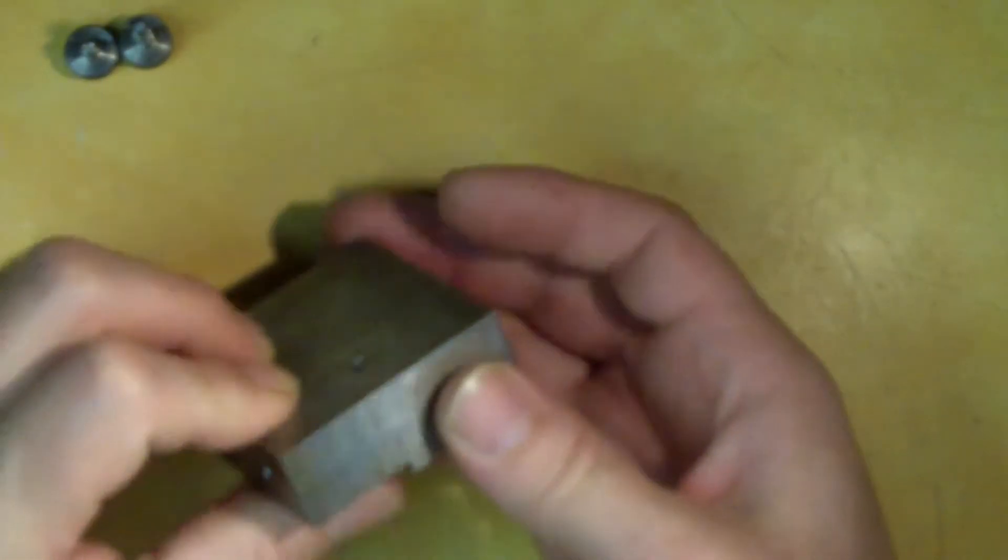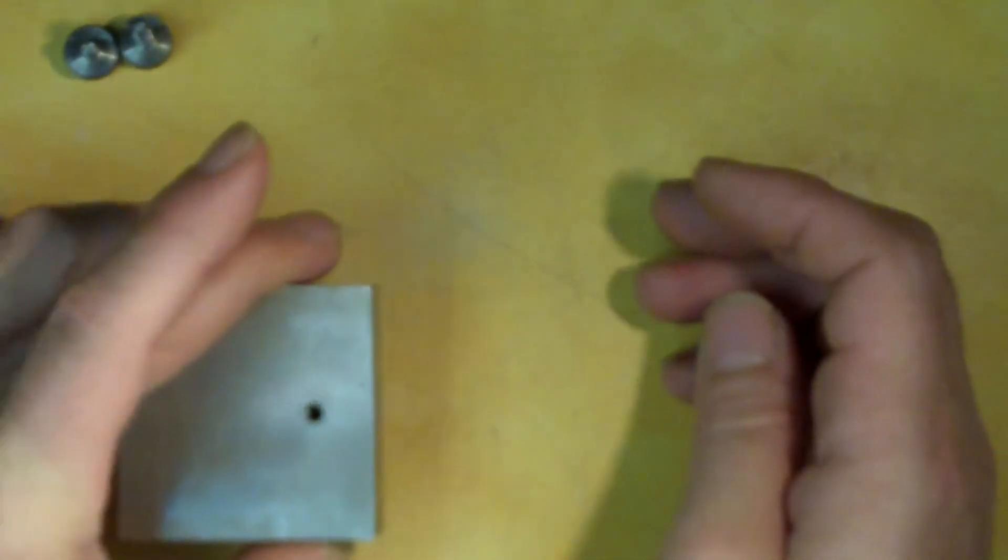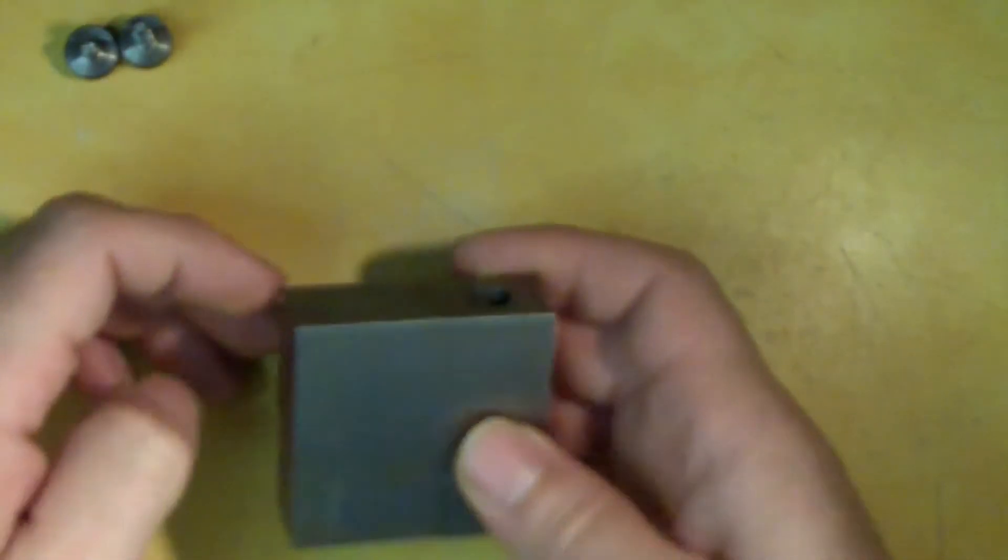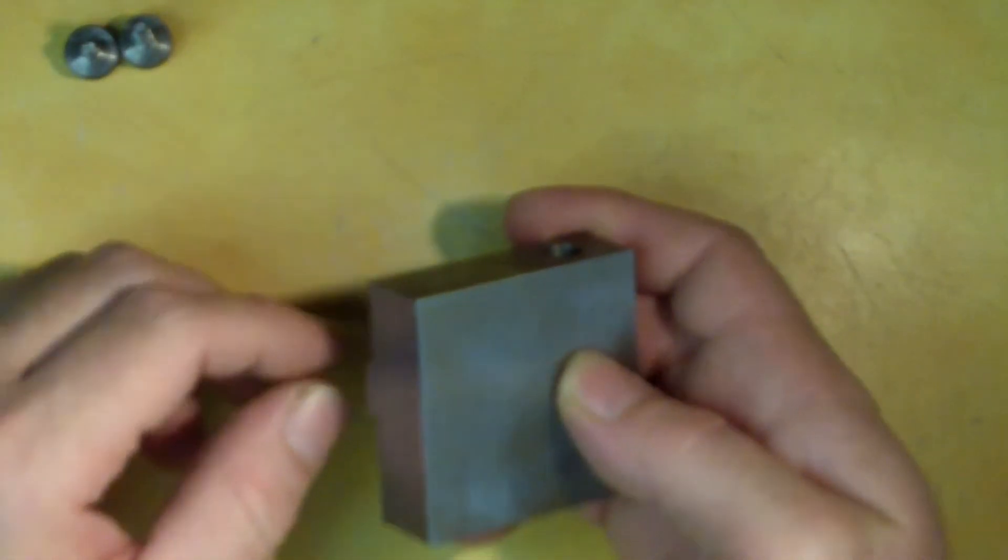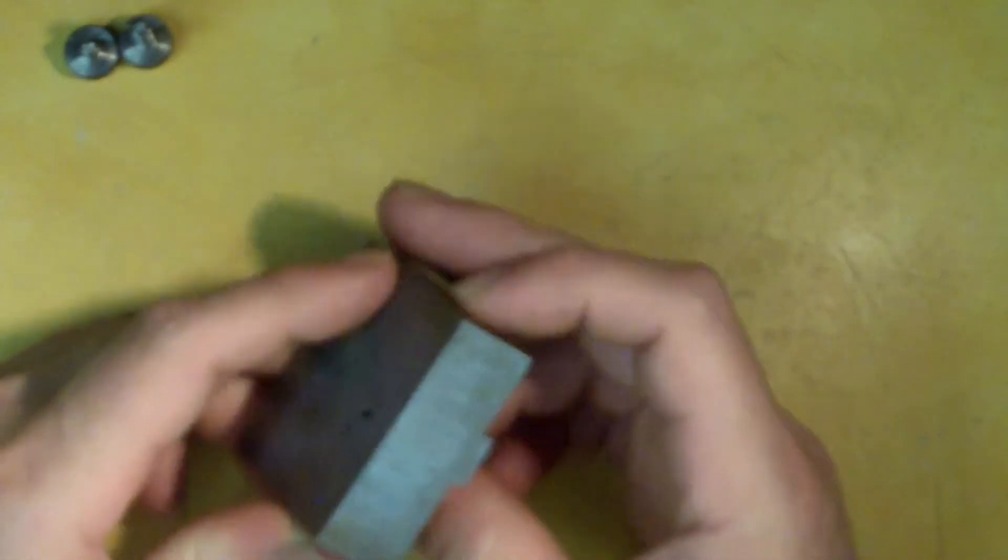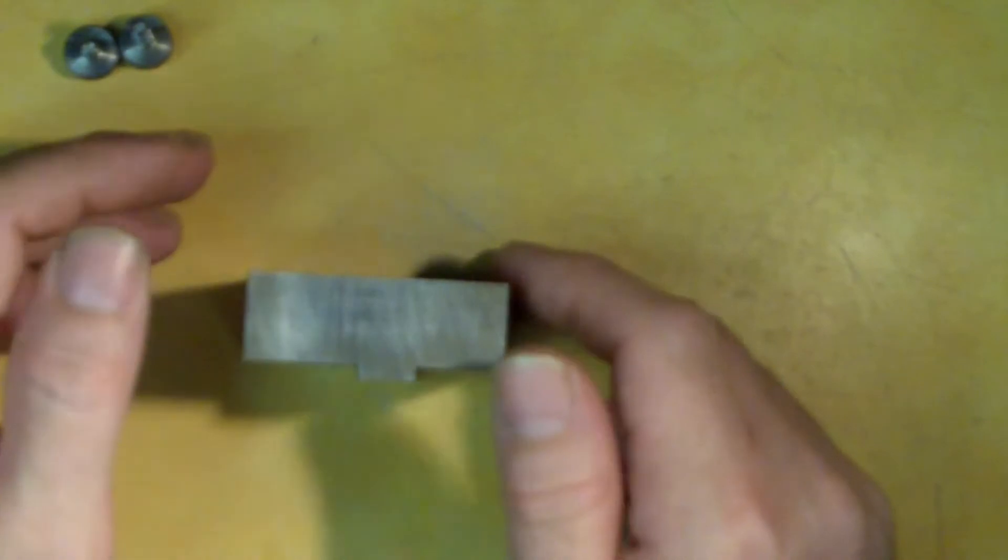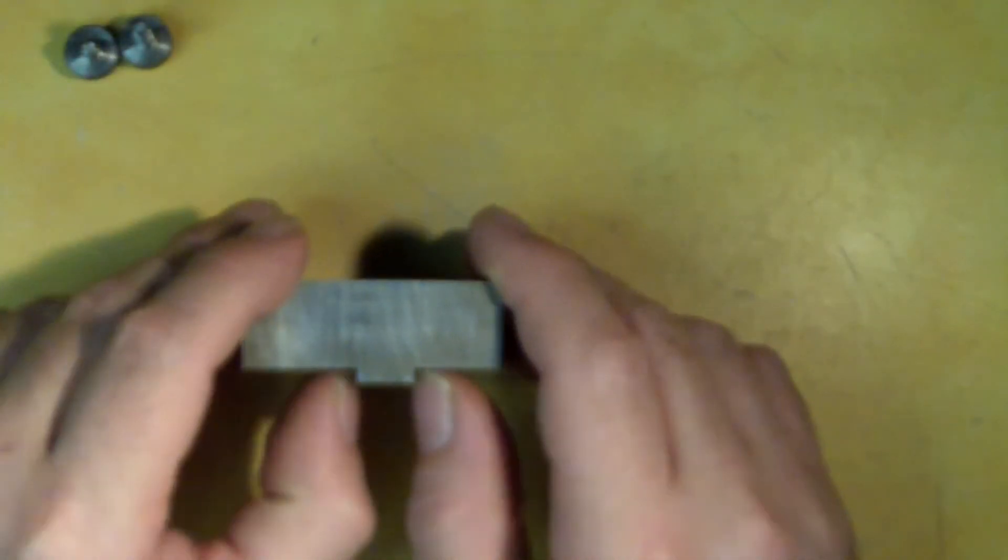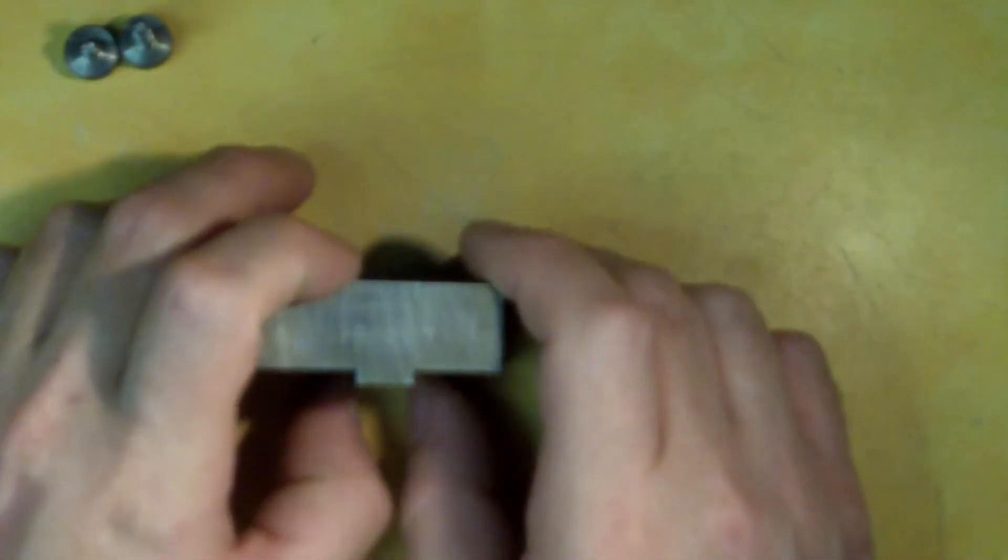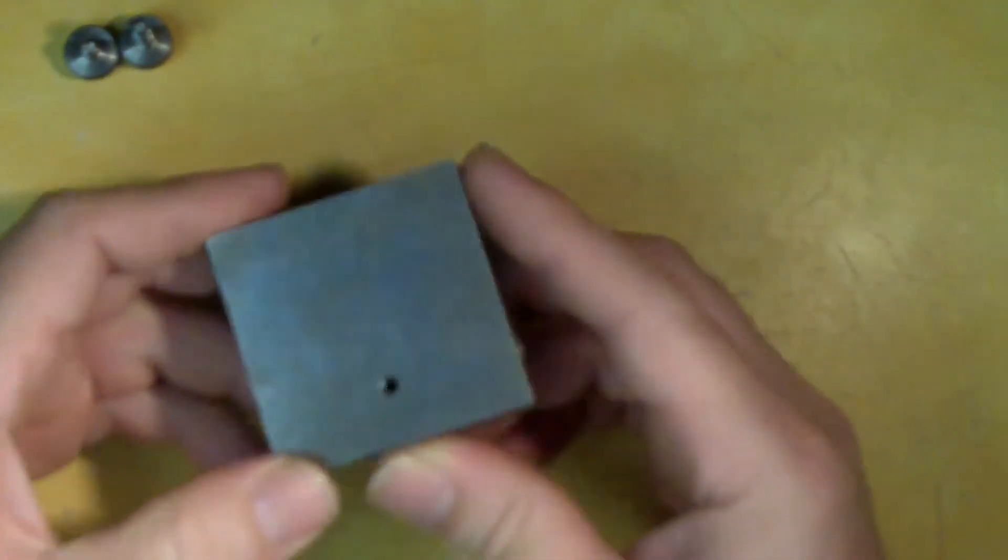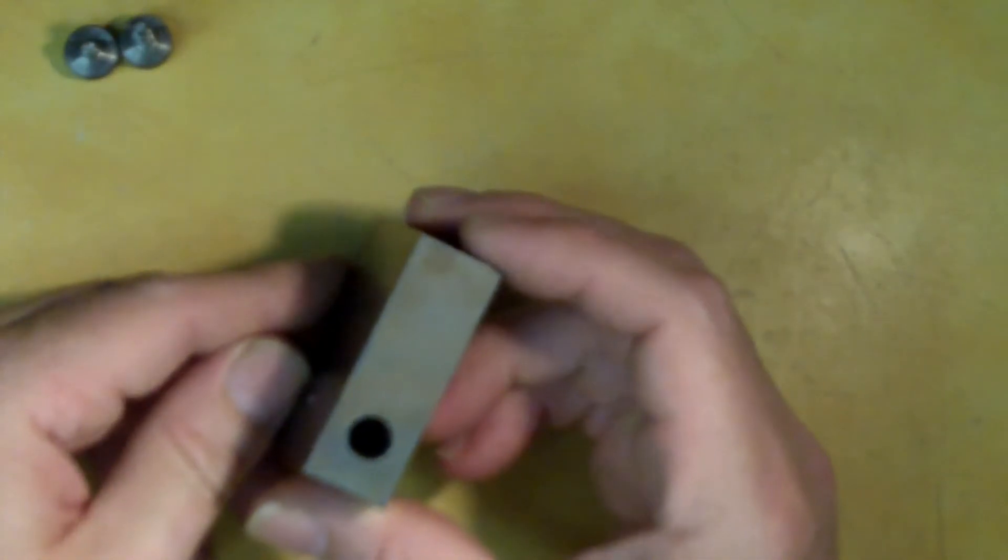So what this key does is actually ride in the miter slot on the grinder, and that will allow me to dress the wheel perpendicular to that miter slot. So to get these measurements I just measured the miter slot. I think I took off maybe a thousandth to give it enough to slide through there easily without binding up. So that's basically the tool in a nutshell.